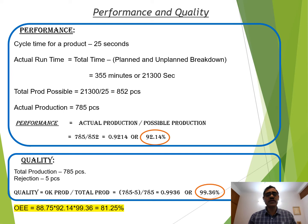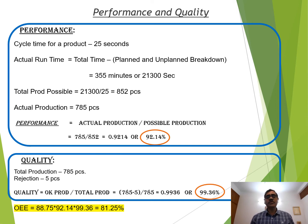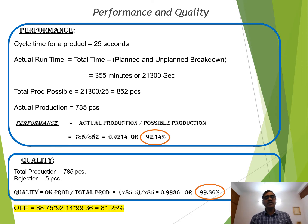The third one — quality — is very simple. Total production is 785 as mentioned above. Rejection, for example, is 5 pieces. So quality is okay production divided by total production: 780 divided by 785 = 99.36%. Now I multiply all three: Availability 88.75% × Performance 92.14% × Quality 99.36% — this gives me an OEE figure of 81.25%.